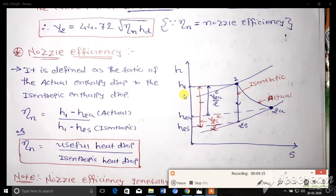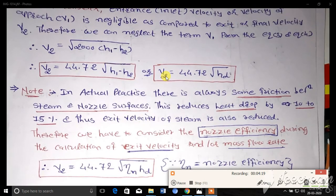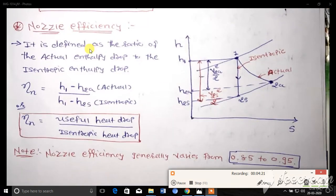I hope friends you will understand how to derive the exit velocity of steam from the nozzle and nozzle efficiency. Thank you so much friend, and stay tuned. In the further lecture we are going to study the maximum mass flow rate of steam through the nozzle and what is the condition for the maximum mass flow rate of steam.